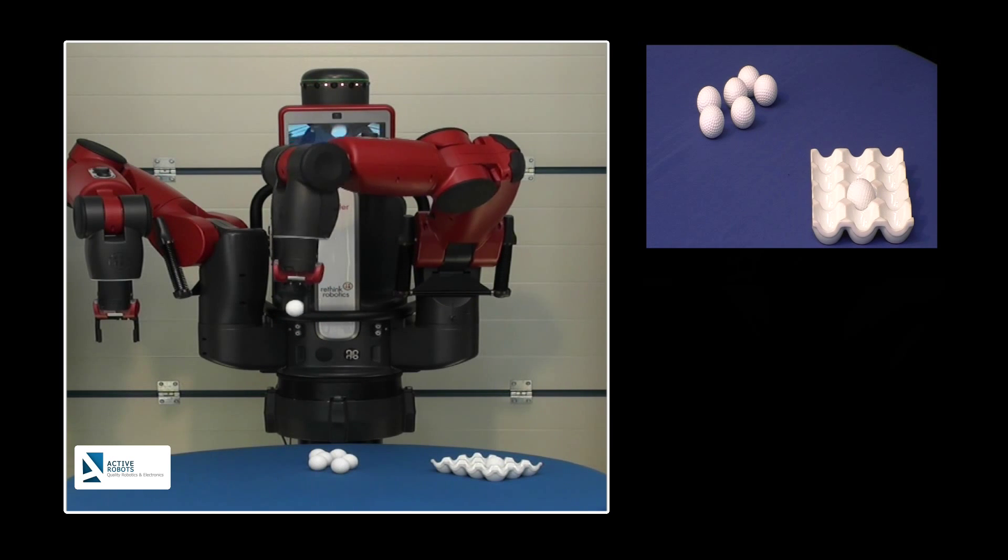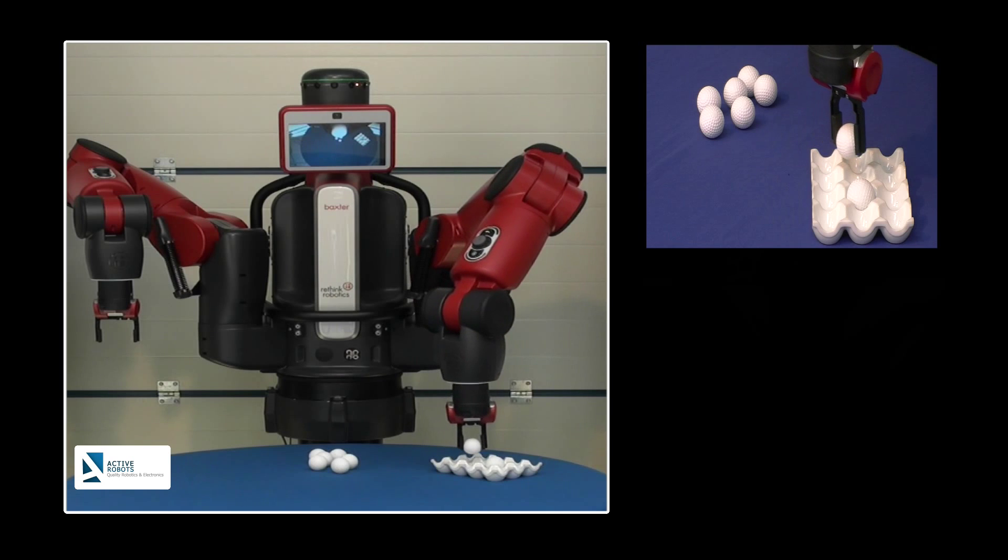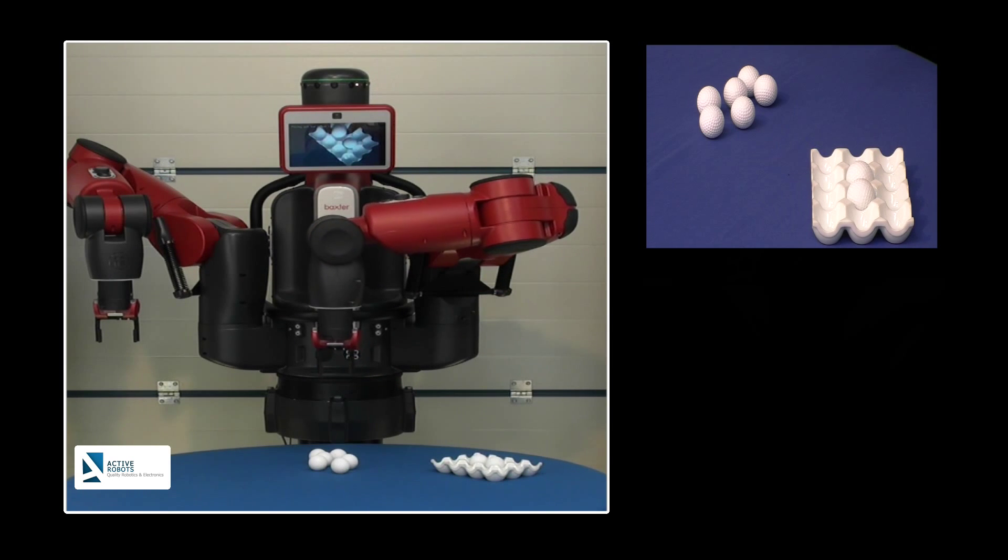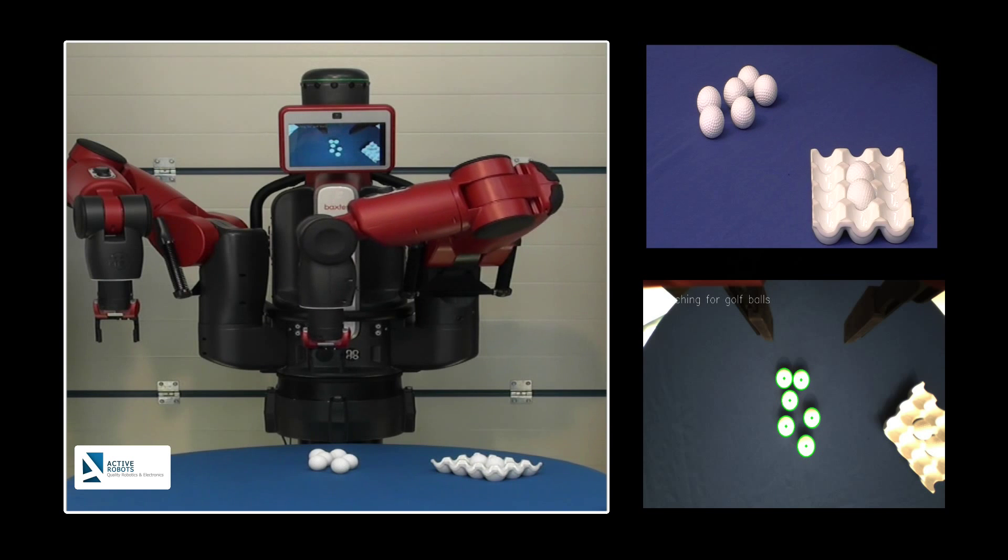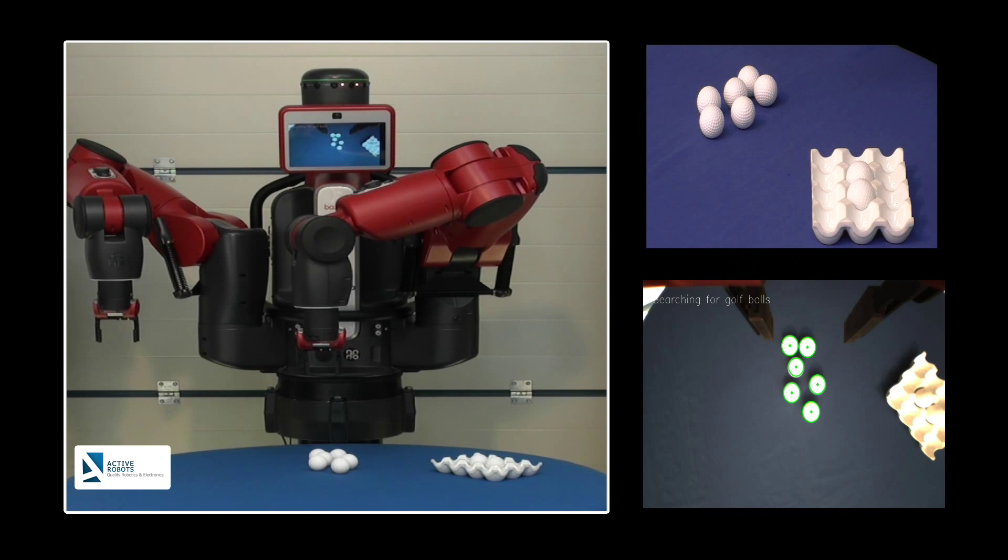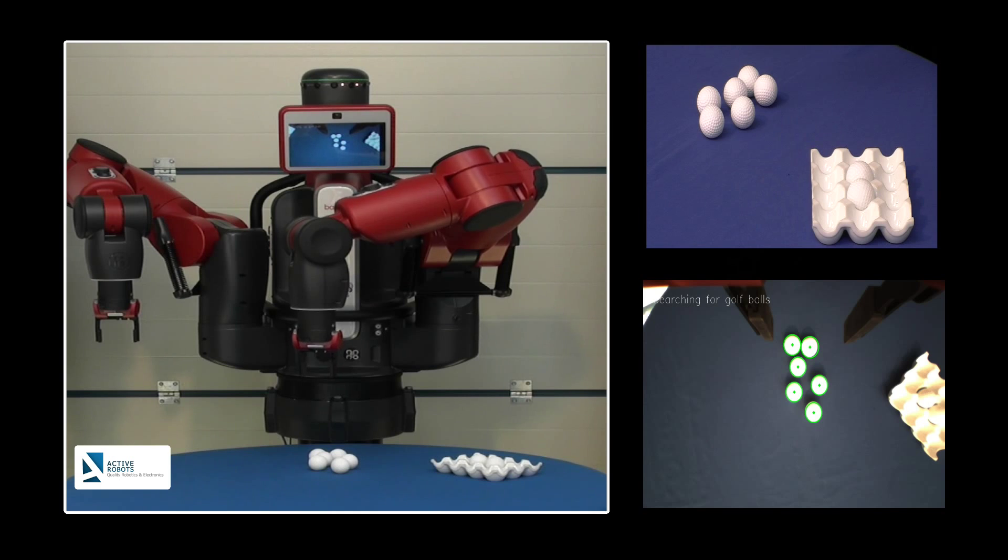Once in the next place, drops the ball in the egg tray. It will carry on doing this until it's found all the balls and moved them to the egg tray. The technique used to find the balls is Hough circles.